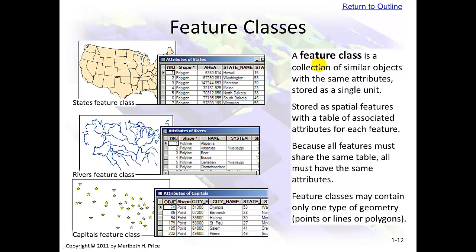Feature classes. A feature class is a collection of similar objects with the same attributes stored as a single unit. This is a states feature class where each entry is an individual state. A rivers feature class lists each individual river, and a capitals feature class lists each individual capital.